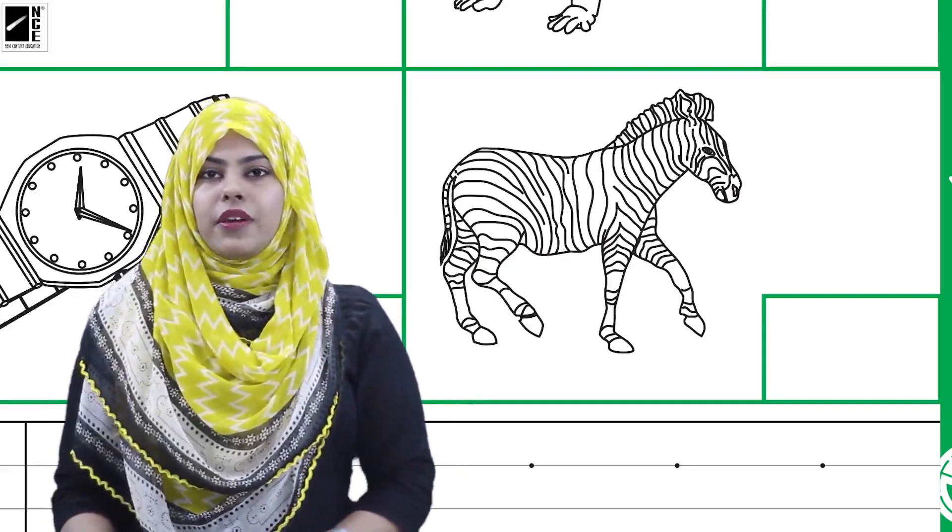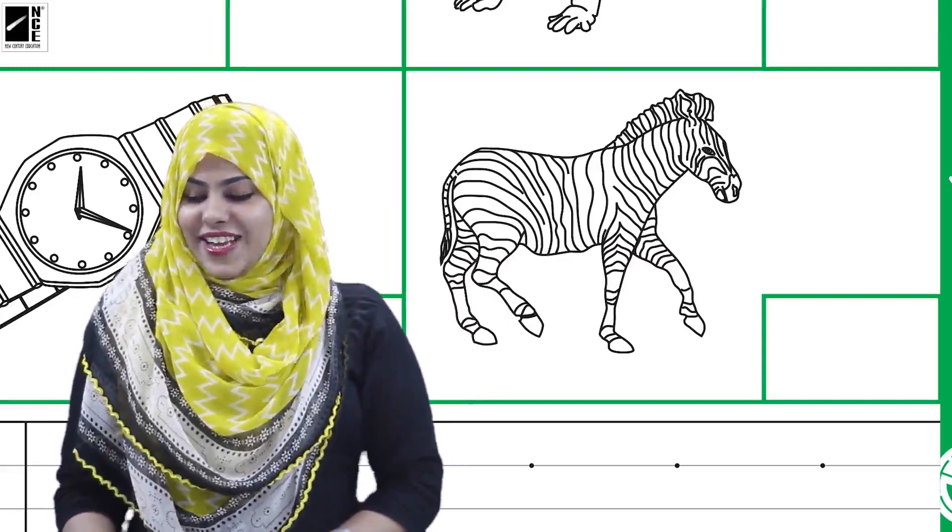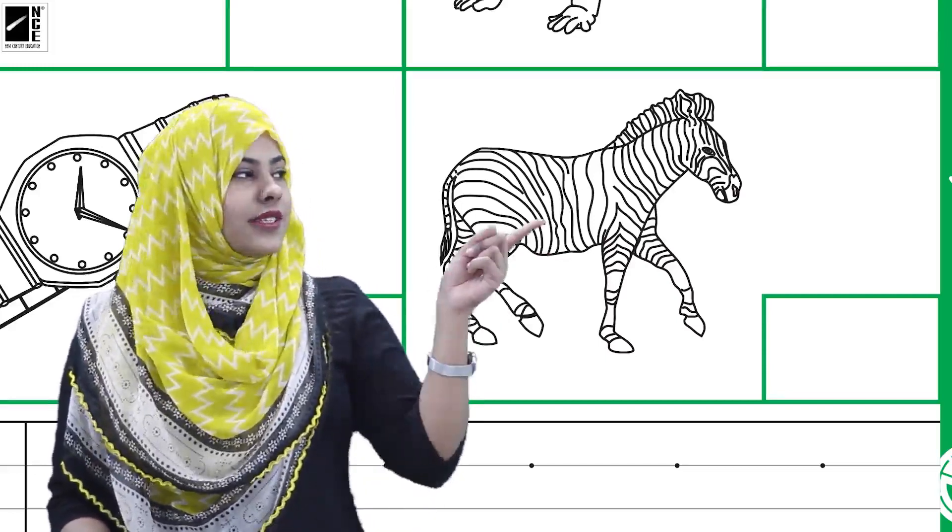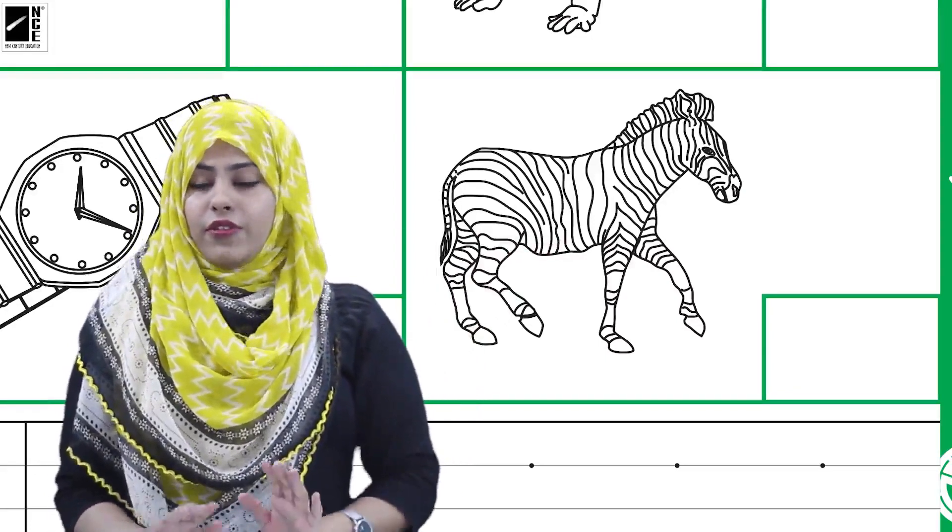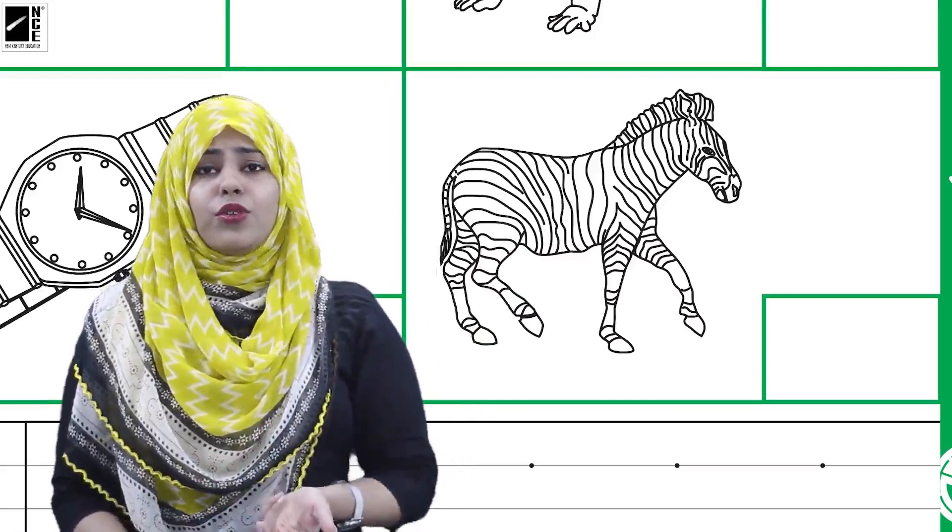you tell me the beginning sound of zebra? Yes, the beginning sound of zebra is 'z', 'z', 'z', zebra. Good! Now we have read all the pictures, but we don't know